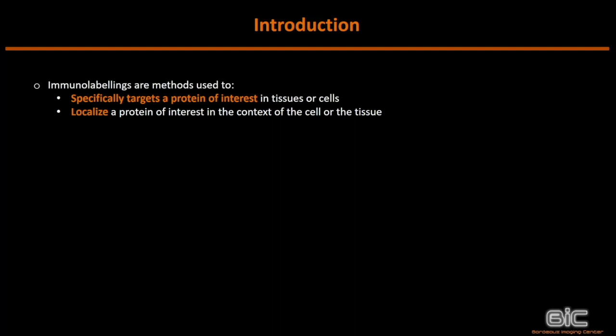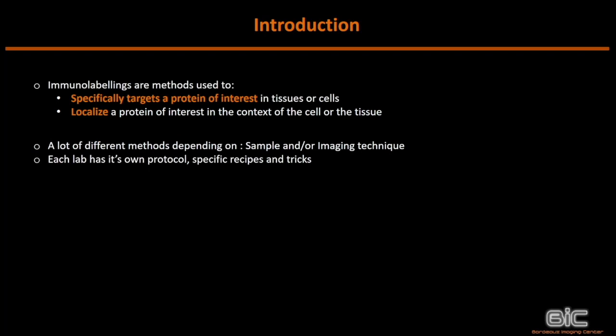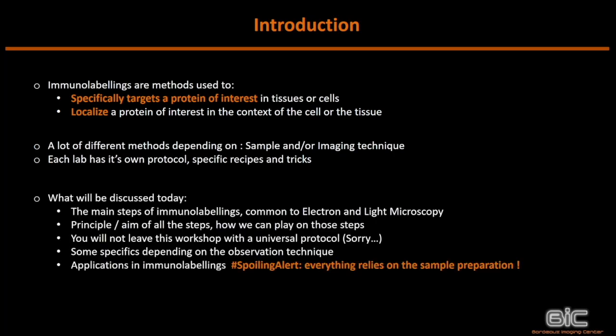Today: immunolabelings. Immunolabelings are methods used to specifically target — and the keyword is specifically — a protein of interest in tissue or cells. But it's not only labeling; it's also localization of your protein of interest in the context of your cell or tissue that will bring you the main information. There are a lot of different methods depending on the sample you are looking at or the imaging technique you use, and each lab has its own protocol, recipe, tips and tricks. Today we will discuss the main steps of immunolabelings common to electron and light microscopy, the principles, aims, and how we can play on those steps to improve the labelings.